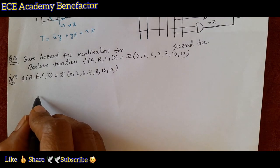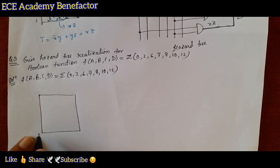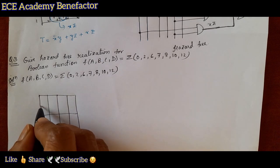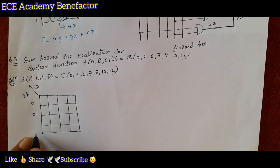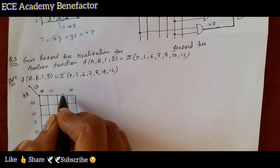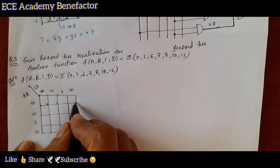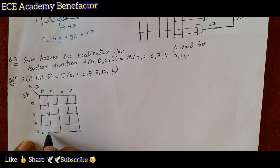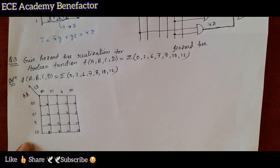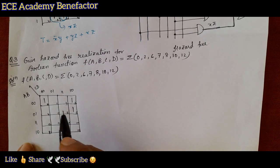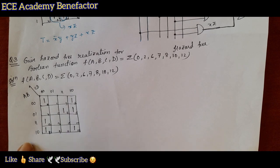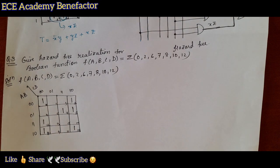This requires a four-variable K-map. We have drawn the four-variable K-map with variables a, b on one side (00, 01, 11, 10) and c, d on the other side. The cell numbering runs from 0 through 15. Now fill the minterms 0, 2, 6, 7, 8, 10, 12 with 1s in the K-map. Now we proceed to the grouping.